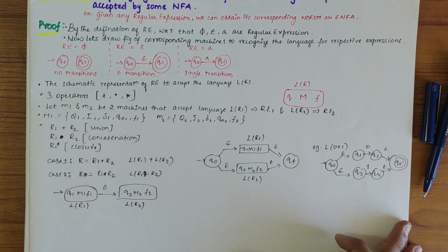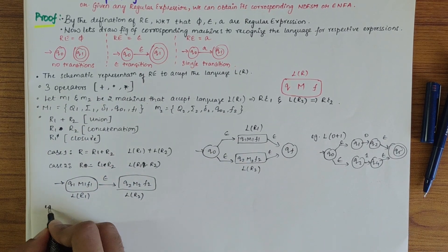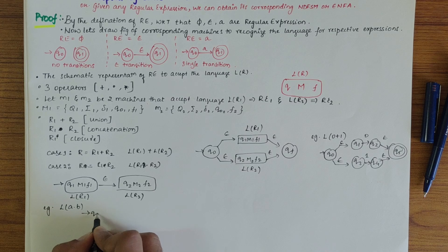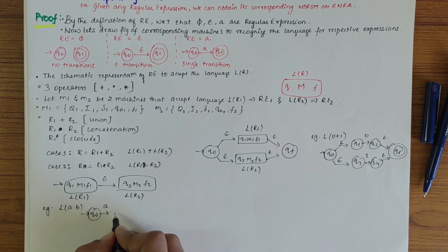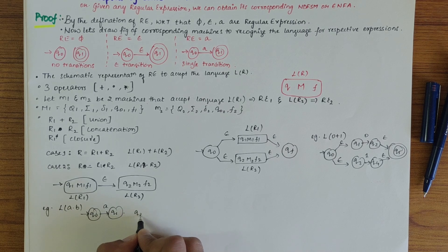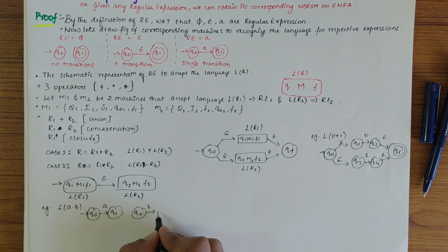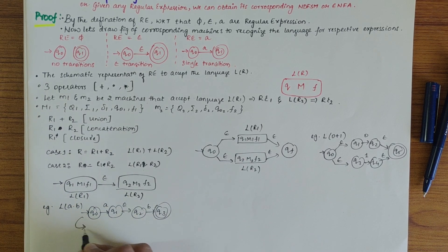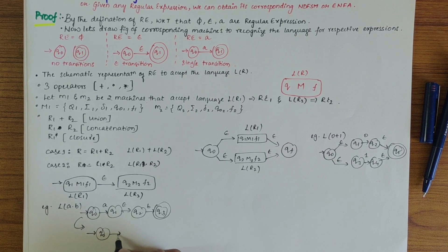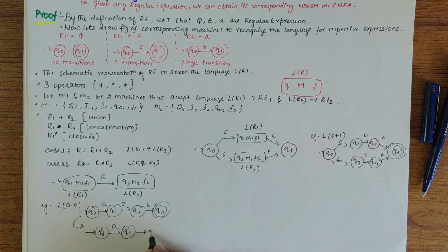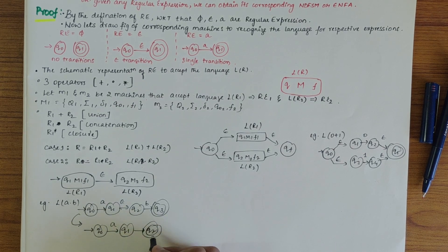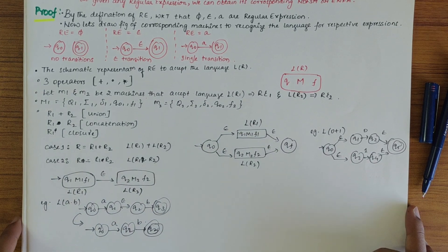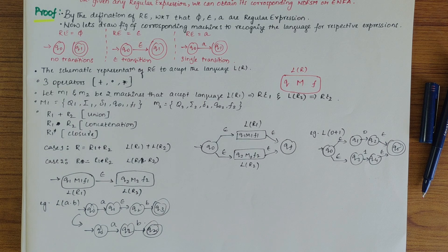Let's take an example to prove this: L(a · b). This is written as Q0 being the start state; over 'a' we get Q1, then an Epsilon transition leads to Q2, and over 'b' we get Q3 as the final state. So we have looked into the two cases; let's move to the third case.